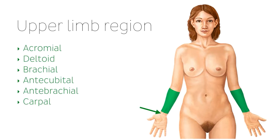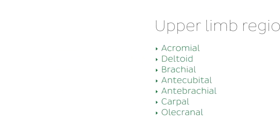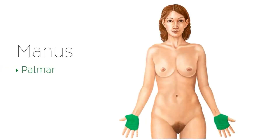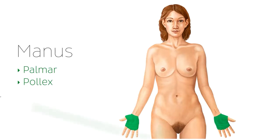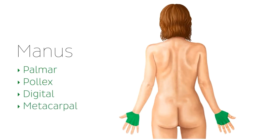On the posterior aspect of the upper limb, the only region not present is the antecubital region, which is replaced by the olecranal region on the posterior arm. The olecranal region includes the olecranon of the ulna, otherwise known as the elbow. Moving down to the hand, referred to as the manus, there are three smaller regions from an anterior view: the palmar region, which refers to the palm; the pollex region, which refers to the thumb; and the digital region, which refers to the remaining four fingers. On the dorsum, or posterior surface of the hand, the metacarpal region replaces the palmar region.